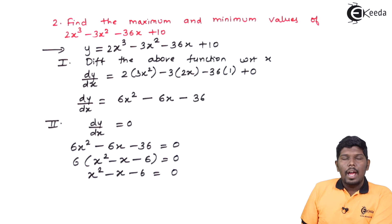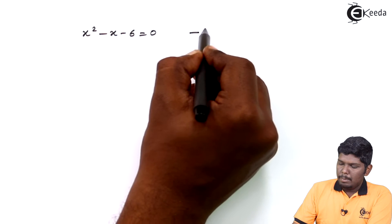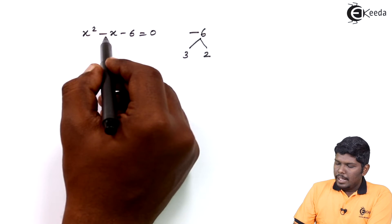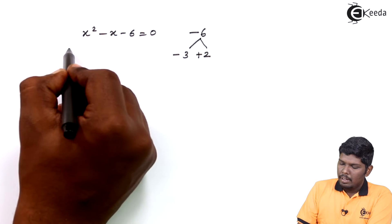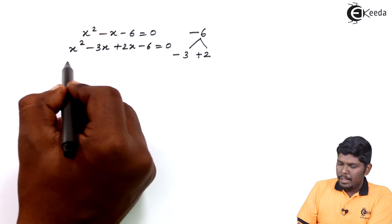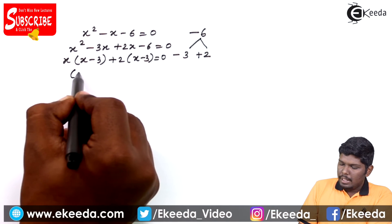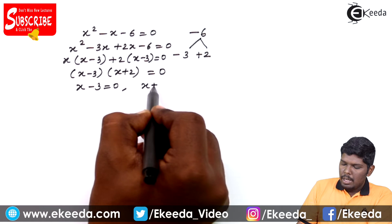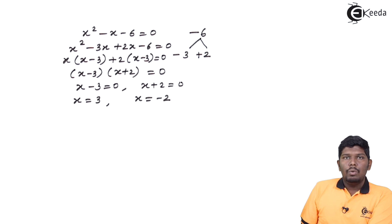We solve x² - x - 6 = 0 using the factorization method. The two terms are -3 and +2, since -3 × +2 = -6 and -3 + 2 = -1. So x² - 3x + 2x - 6 = 0, giving (x - 3)(x + 2) = 0. Therefore x = 3 and x = -2.